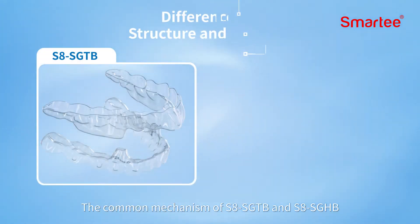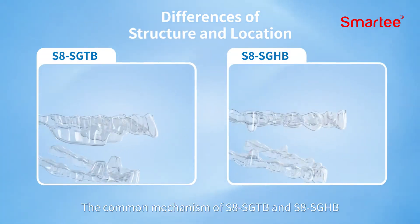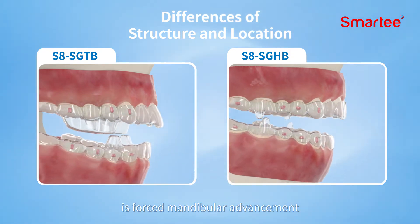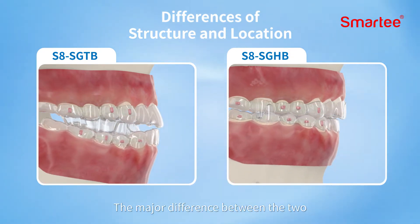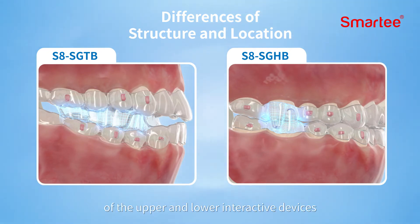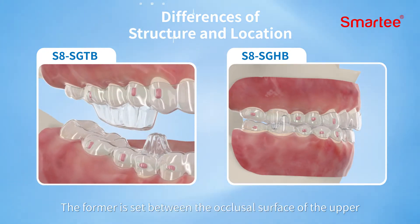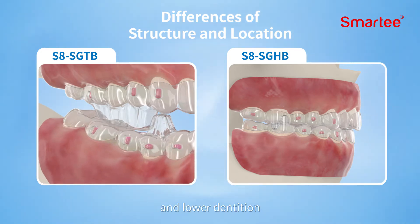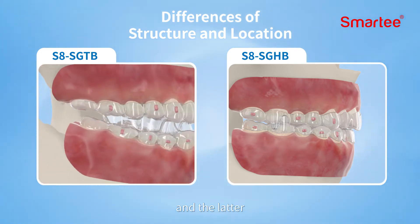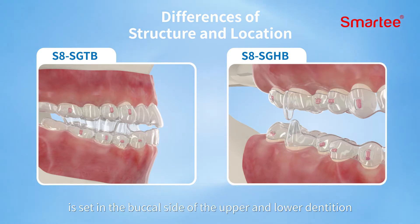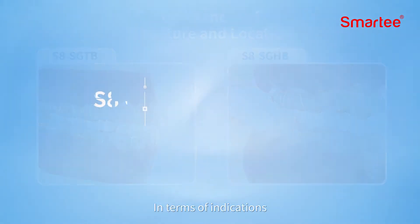The common mechanism of S8 SGTB and S8 SGHP is forced mandibular advancement. The major difference between the two is the structure and position of the upper and lower interactive devices: the former is set between the occlusal surface of the upper and lower dentition, and the latter is set on the buccal side of the upper and lower dentition.